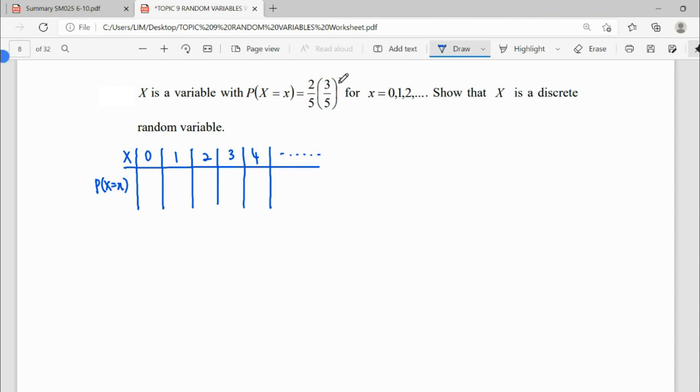When X is 0, the probability here will be power 0, so it will give us 2 over 5. When X is 1, when we substitute here, it will give us power of 1, so 2 over 5 times 3 over 5.